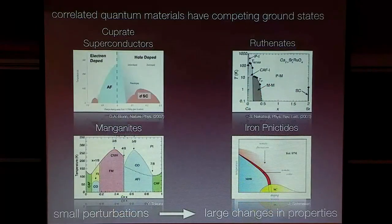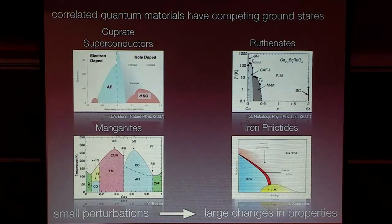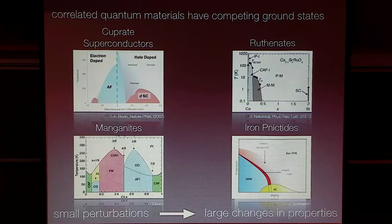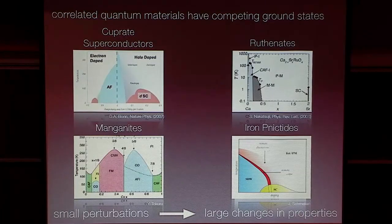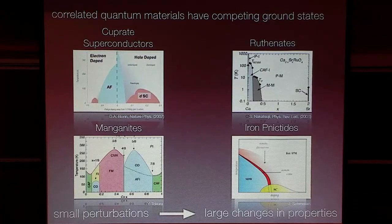One of the hallmarks of these correlated quantum materials is that they have very complex phase diagrams. They have competing interactions, which means there are many different kinds of competing ground states. In recent years, a lot of people have been very excited with the possibility of parking yourself at the boundary between one of these phases and using a small perturbation to kick yourself from one side of the phase diagram to another — in analogy to a transistor, switching between an insulator and a metal. Here you might switch from an antiferromagnet to a superconductor, or a ferromagnet to a charge-ordered state. These potentially small perturbations could give rise to large changes in properties.